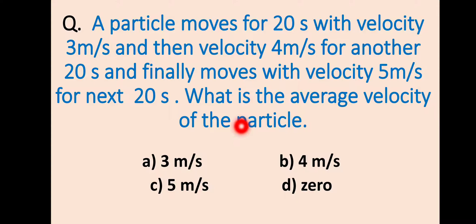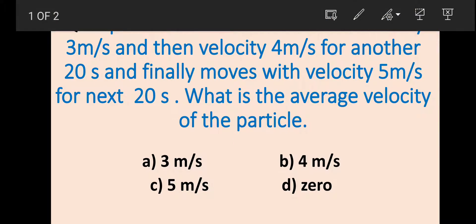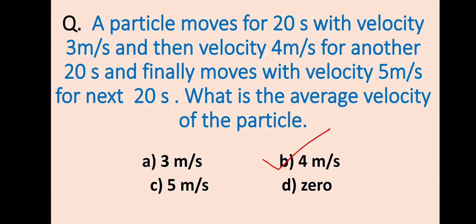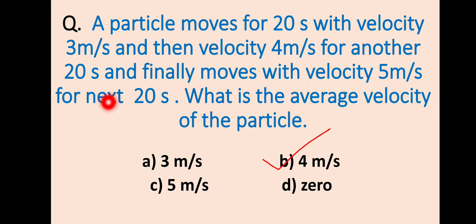The correct option will be B — 4 meter per second. A particle moves for 20 seconds with velocity 3 meter per second, then 4 meter per second for another 20 seconds, and finally 5 meter per second for the next 20 seconds. The average velocity of the particle is 4 meter per second.